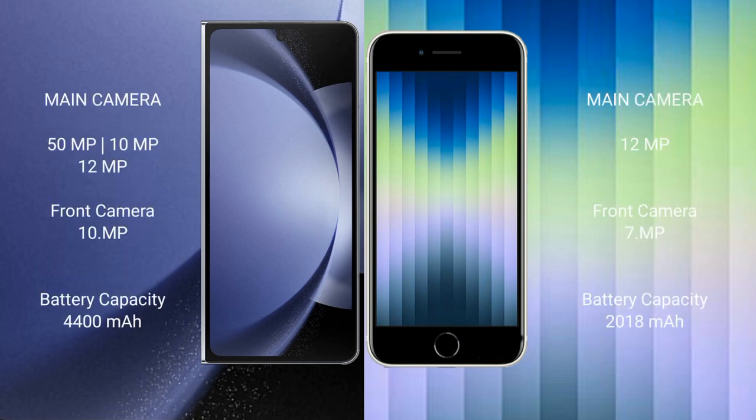Samsung Galaxy Z Fold 6 comes with a rear triple camera setup: 50MP plus 10MP plus 12MP, and a 10MP front camera. iPhone AC has a rear single camera setup of 12MP and a 7MP front camera.